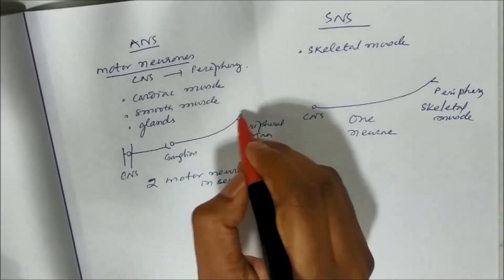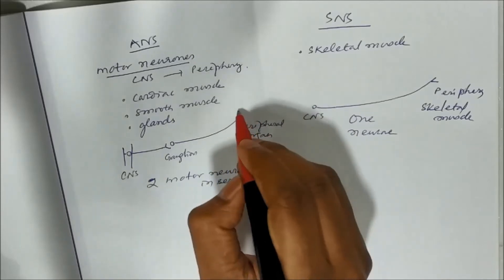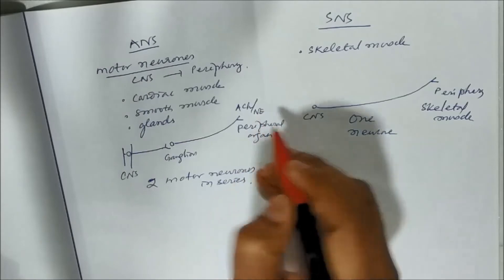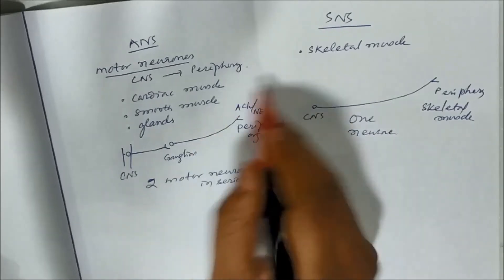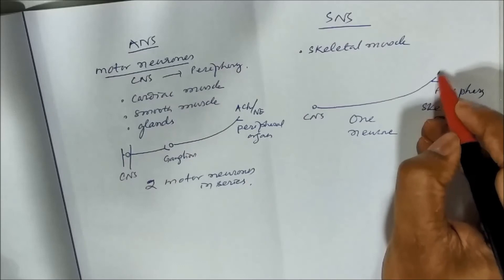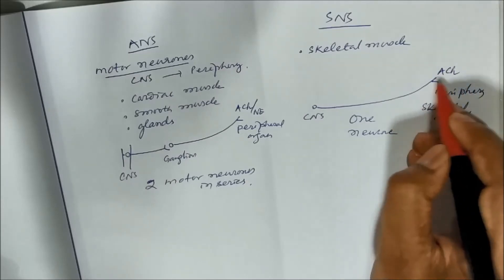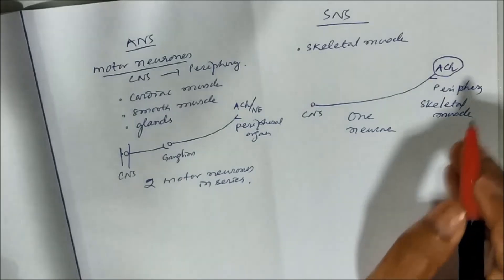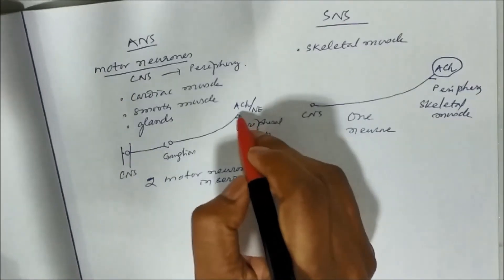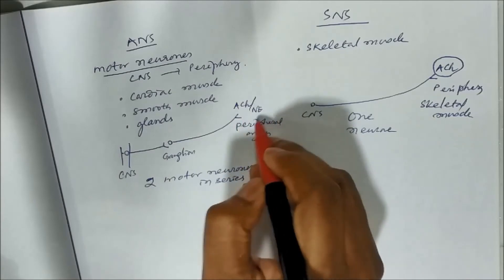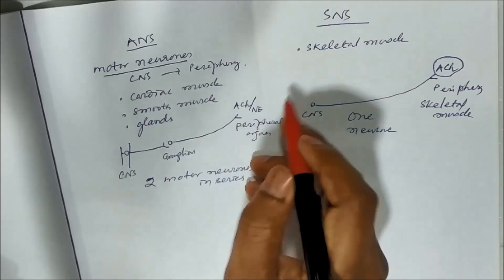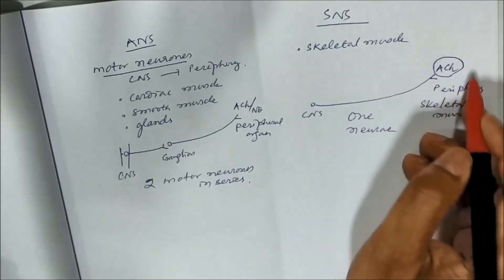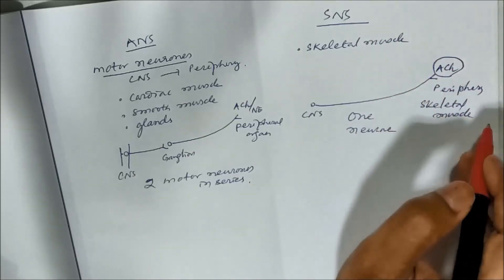And here, there can be release of acetylcholine or noradrenaline as the neurotransmitters at the nerve ending. But here at the nerve ending, only acetylcholine is released. So in autonomic nervous system this can release acetylcholine or noradrenaline. Accordingly it is cholinergic or adrenergic. But in SNS, somatic nervous system, there is only release of acetylcholine.